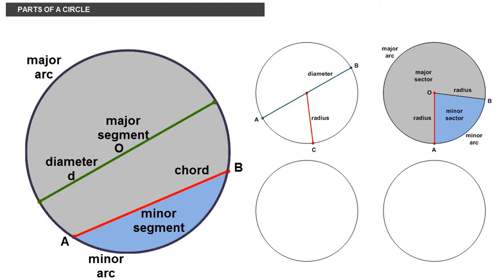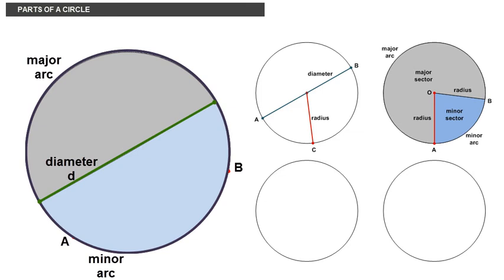Do note that chords do not produce slices of a circle like sectors. Unless of course the chord drawn is the diameter which in this case you would get two half circles called semicircles.